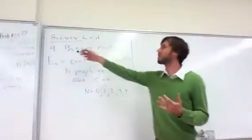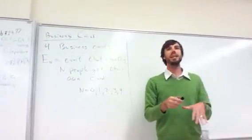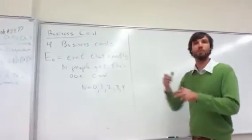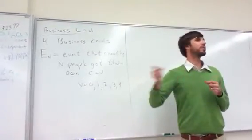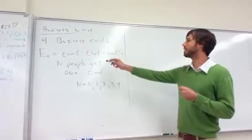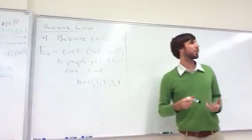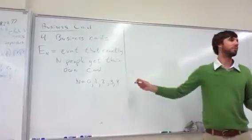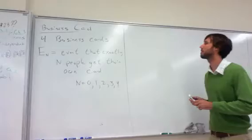Problem: we're at a party and four people put their business cards into a hat. Everyone goes and draws exactly one business card from the hat, and we're interested in the event that exactly n of them get their own card, for n equals 0 up to 4, which would be the possible values.